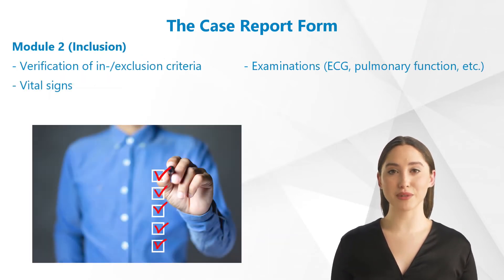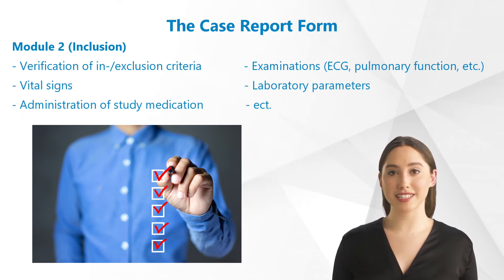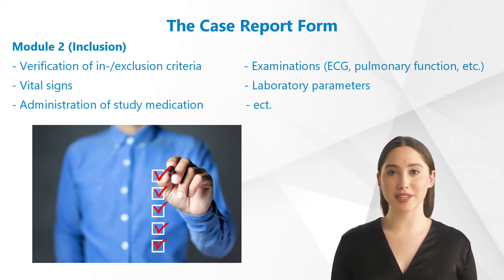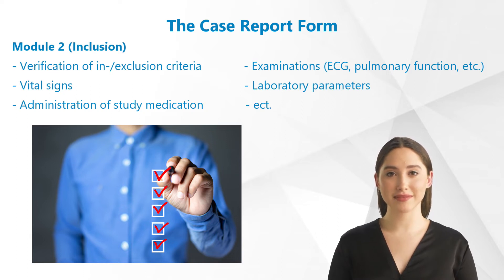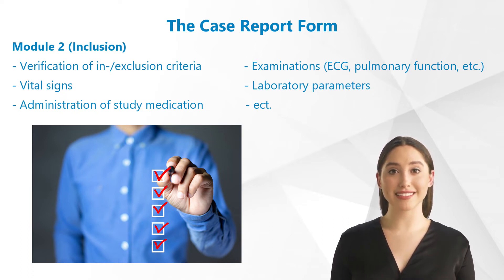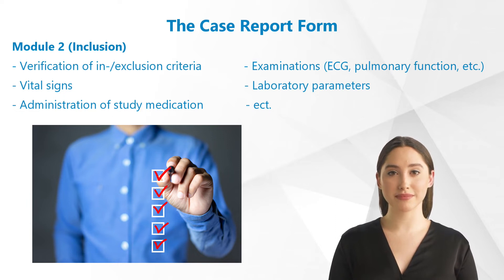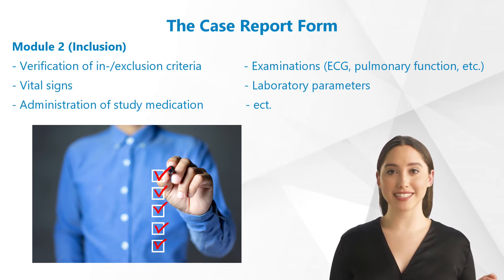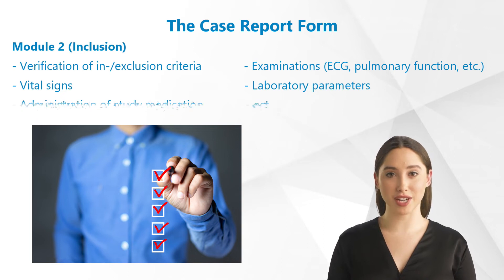In the second module of the CRF, the inclusion of the patient is documented. The compliance of inclusion and exclusion criteria is verified by laboratory values and the findings of an investigation. In order to document the state of the patient's health, results of investigations such as ECG, lung function tests, scans, urodynamic examinations, etc., are also recorded. Vital signs and laboratory parameters are once again documented, and the administration of the study medication is noted in Module 2 as well.